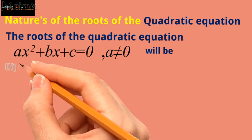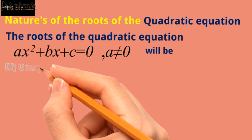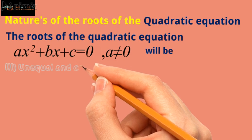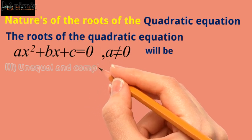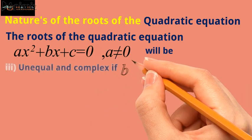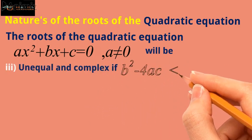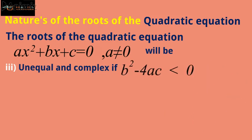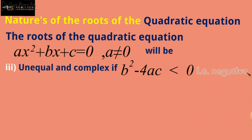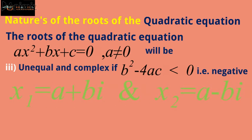Case three — the roots will be unequal and complex if b squared minus 4ac is less than 0. That is, if the discriminant of the quadratic equation is negative, then the roots will be unequal and complex.